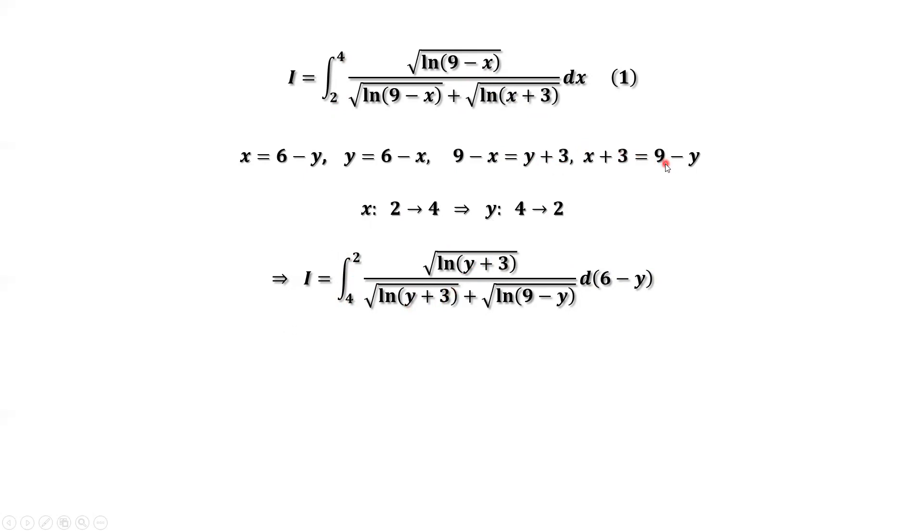x plus 3 equals 9 minus y. Here it should be 9 minus y. d of 6 minus dy. d of 6 equals 0. d of negative y equals negative dy. We can put the negative sign in front.